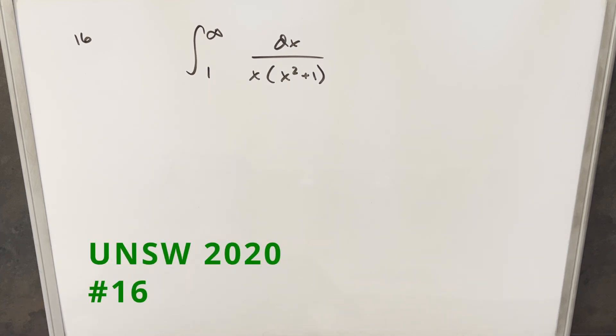Okay, we have here another integral from the UNSW integration B 2020. This one's problem 16. We have the integral from 1 to infinity of dx over x times (x squared plus 1).